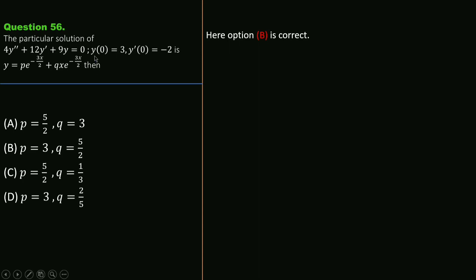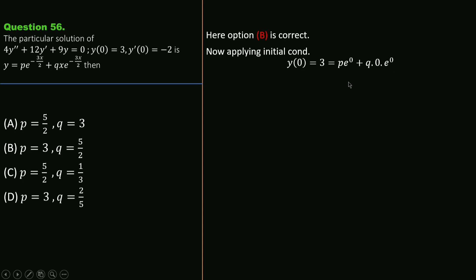Applying the initial condition y(0) = 3 into the equation — substituting x = 0 — we get P·e^0 + Q·0·e^0. Since e^0 = 1, this gives P = 3.